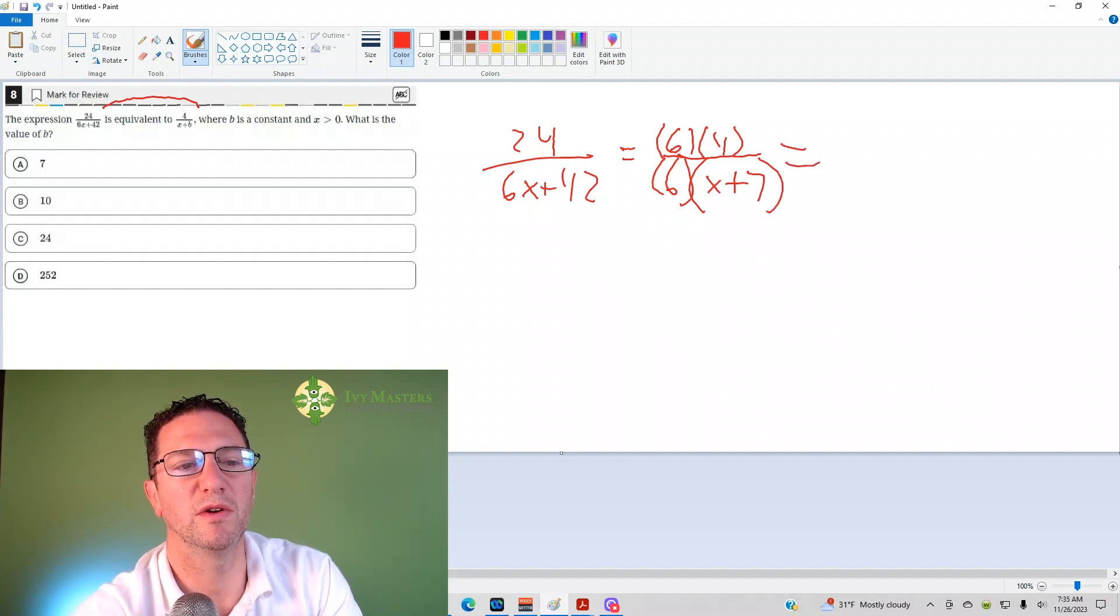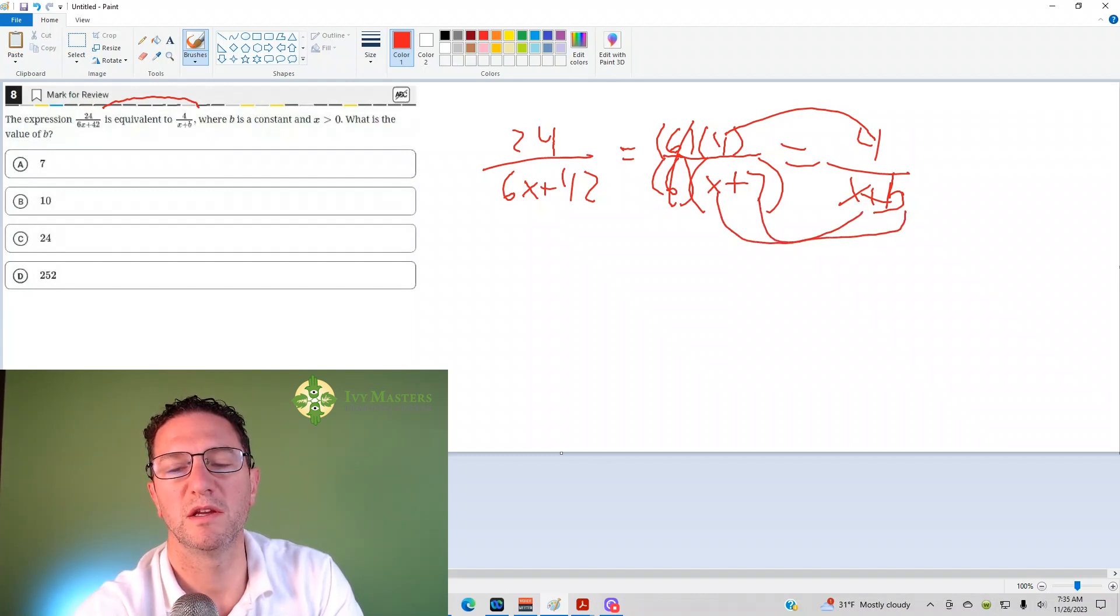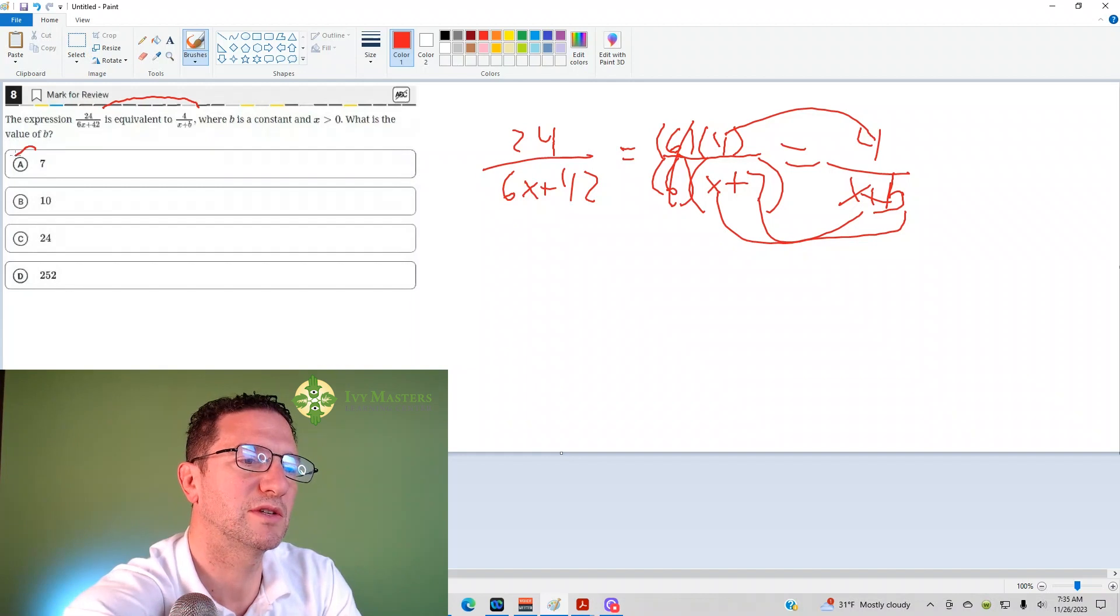And if that's equivalent to 4 over x plus b, you know, 1 over 1, that would just cancel. So, 4 corresponds with 4, x corresponds with x. You can see that the 7 corresponds with b. Your correct answer is a.